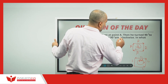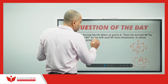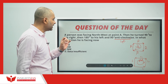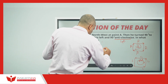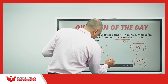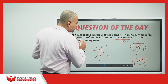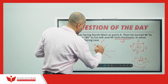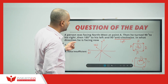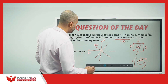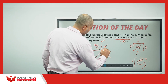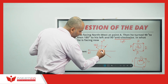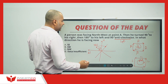A person was facing northwest at point A. Always in direction questions, plot the direction symbol first. This is north and this is west; between north and west is northwest. He was facing initially at this point, then he turned 90 degrees to his right. Every direction is separated by an angle of 45 degrees, so 90 degrees to his right brings him to a new direction.